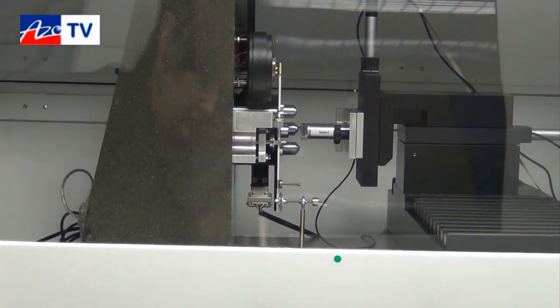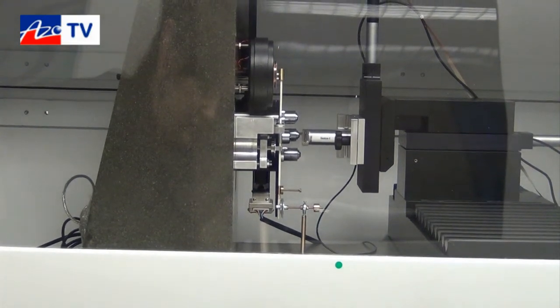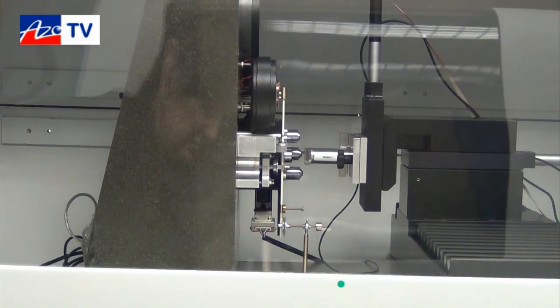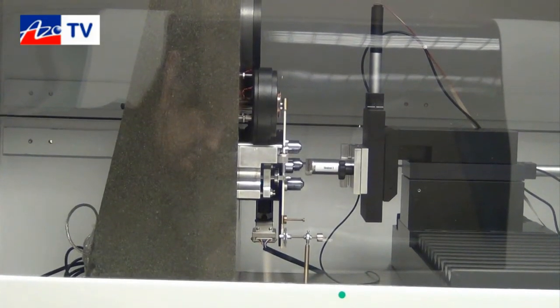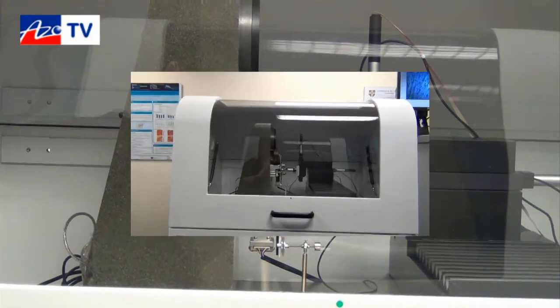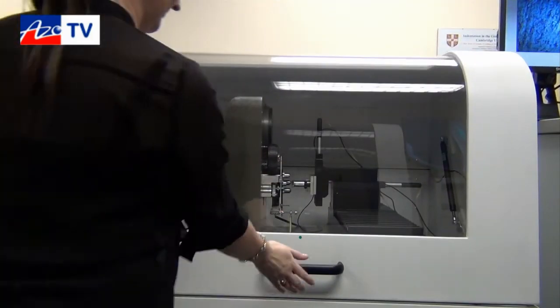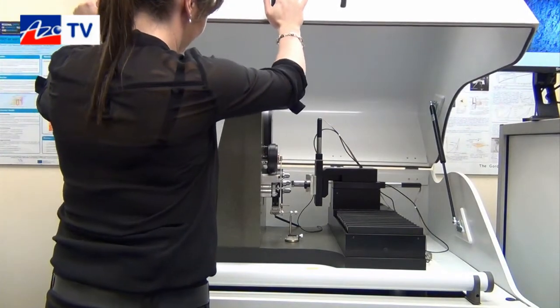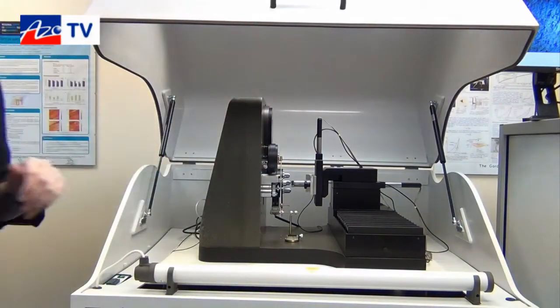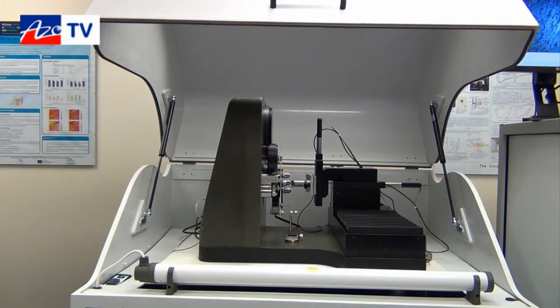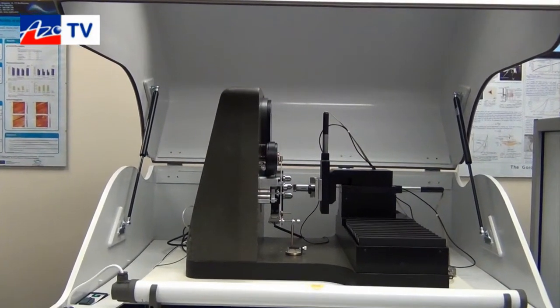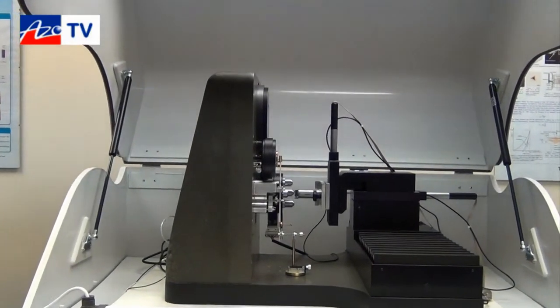What sort of stuff does the NanoTest Vantage actually measure? What sort of properties can people measure? As a central instrument, it does nano indentation over a range of temperatures and strain rates. It can do nano impact, which is completely unique to this instrument, offering very high strain rate and dynamic hardness measurements. You can also do repetitive impact to look at fracture and fatigue, and we also do nano scratch and wear and nano fretting, both of which are tribological studies.